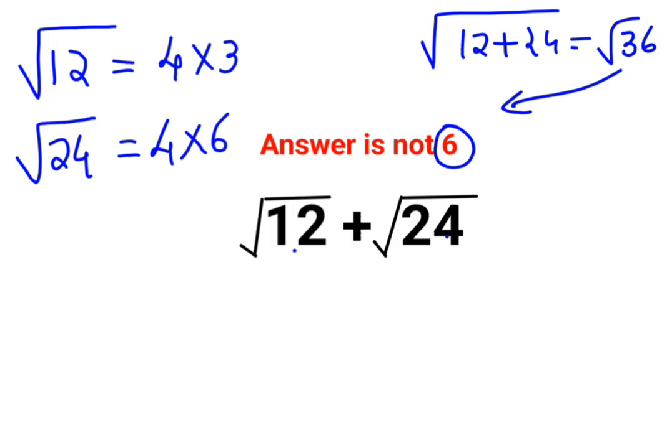Now when you take 4 outside the root, you get 2√3. Similarly, when you take the 4 outside the root, you will get 2√6.